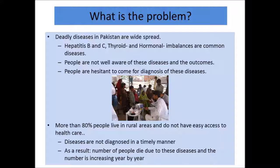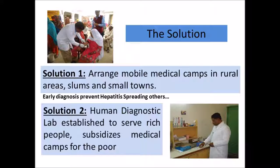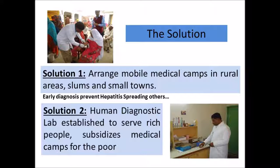We have proposed a solution in two categories. First, we arrange mobile medical camps in rural areas, slums, and small towns, focusing on underprivileged people who do not have the capacity to pay for diagnosis. Second, we have established a human diagnostic lab which serves paying customers to generate revenue. This revenue subsidizes our medical camps to serve poor people.